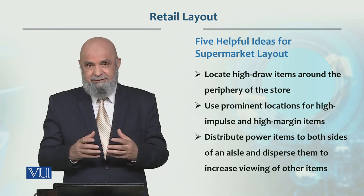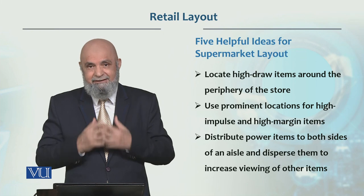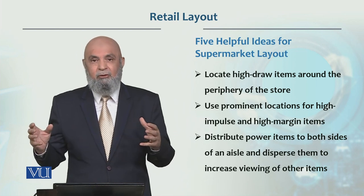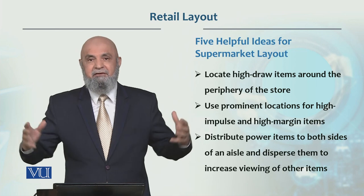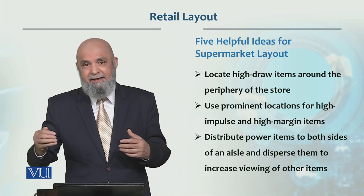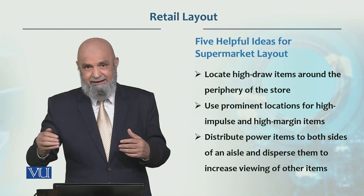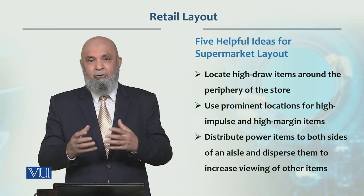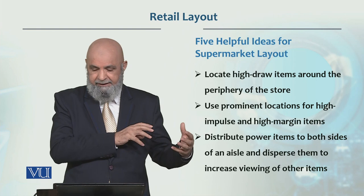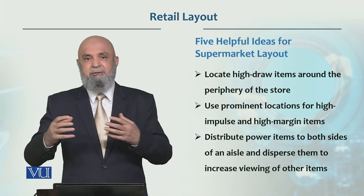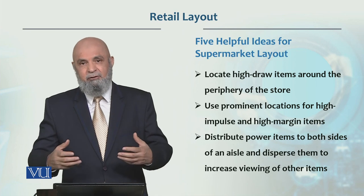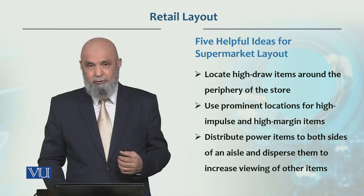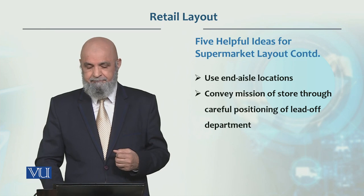جو power items ہیں — جو item جس کو خریدنے کے لیے لوگ آ رہے ہوتے ہیں — ان کو usually aisles کی دونوں sides پر رکھا جاتا ہے اور درمیان میں disperse کیا جاتا ہے۔ وہ اس لیے کہ اس کو لینے کے لیے customer جب aisle سے گزرے تو اس کو دوسرے items بھی نظر آئیں اور ہو سکتا ہے کہ ان power items کی وجہ سے وہ دوسرے items بھی purchase کر لے جو اتنے fast moving نہیں ہیں۔